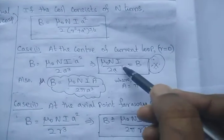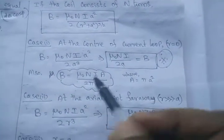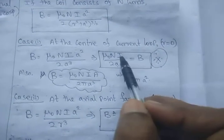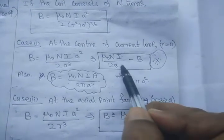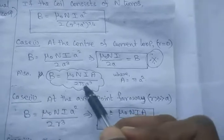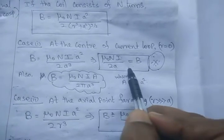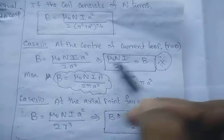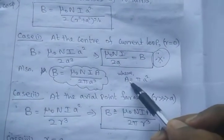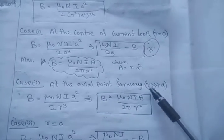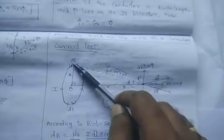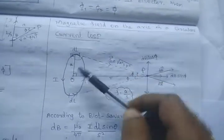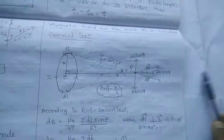We can also represent this equation in terms of the area of the circular loop. Area = πA². Substituting πA² for the numerator and denominator as appropriate, we can rewrite the equation in terms of the area. Similarly, for the far axial point where R is very, very much larger than A — the radius of the loop is very small compared to R.